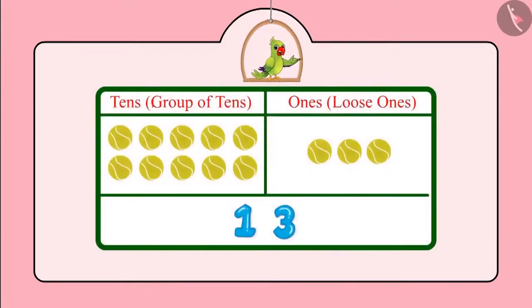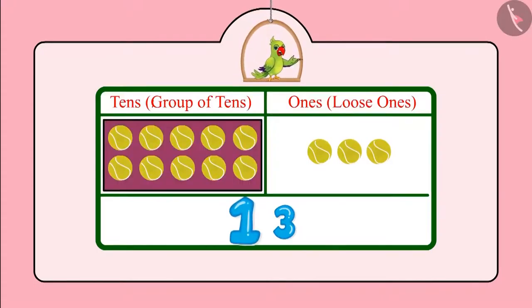So children, do you remember tens and ones? Here we have 13 balls. That is one 10, in which there are 10 balls, and three ones, in which there are three balls.